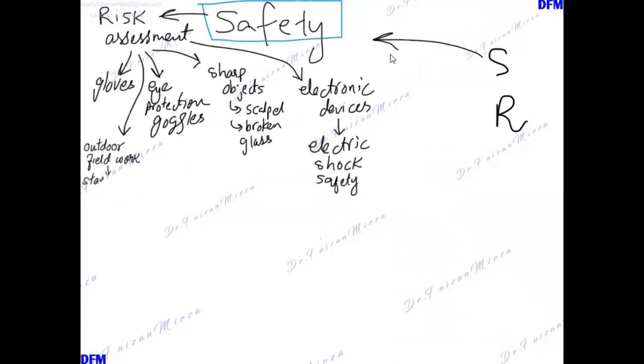For outdoor fieldwork, you should stay with the group, avoid getting lost, and wear proper clothing so you don't get stung or bitten by insects. When mentioning risk, you need to state the precautions. Gloves are used because chemicals might be corrosive. Eye protection is for fumes. Sharp objects may cause cuts.